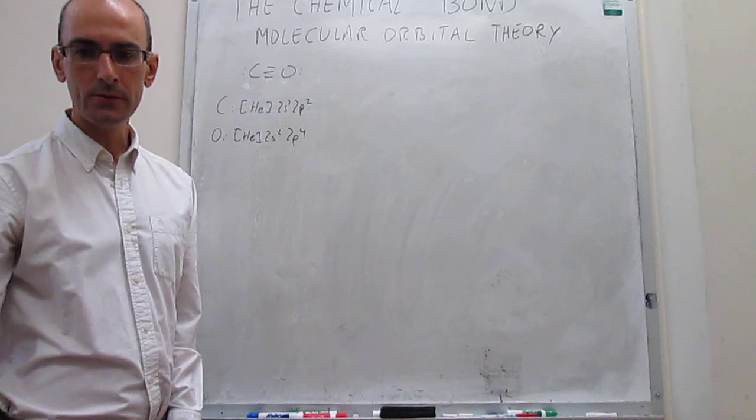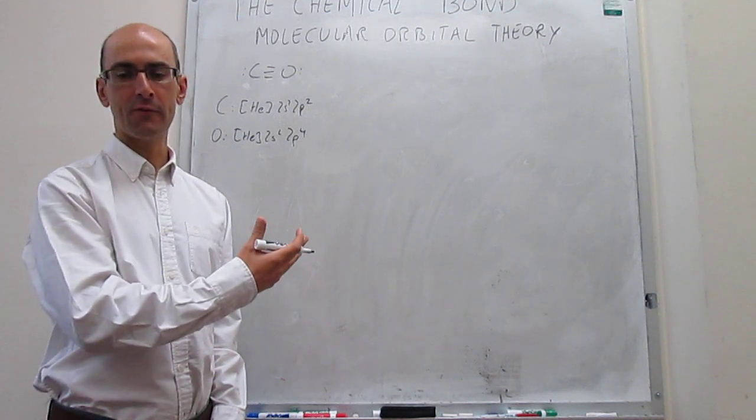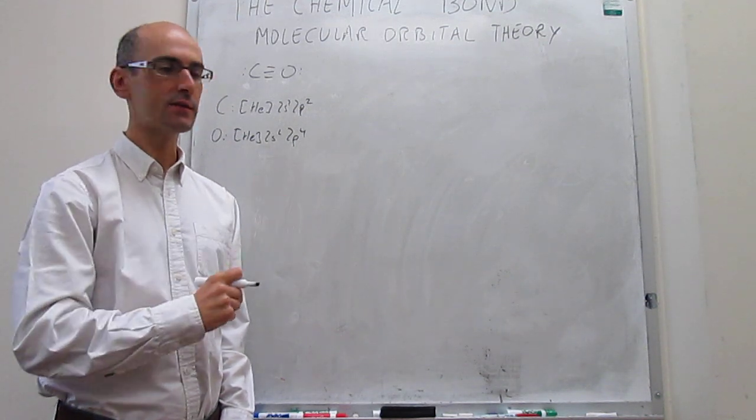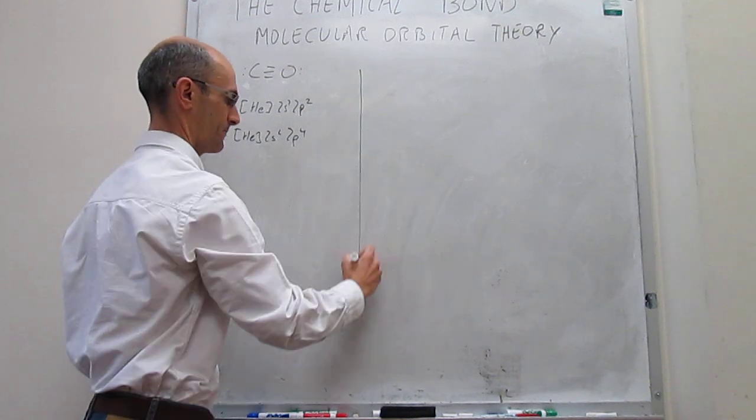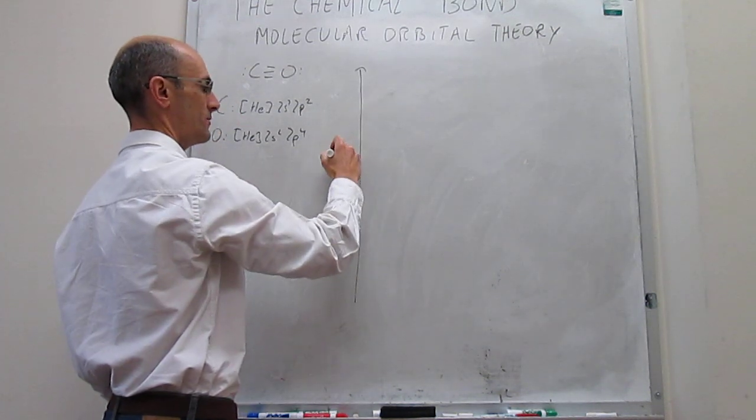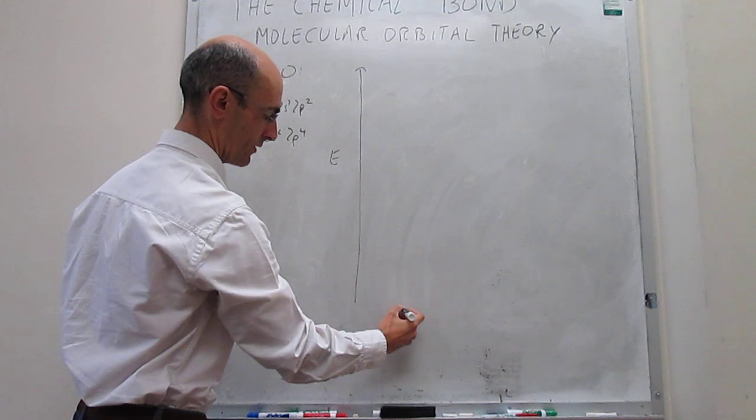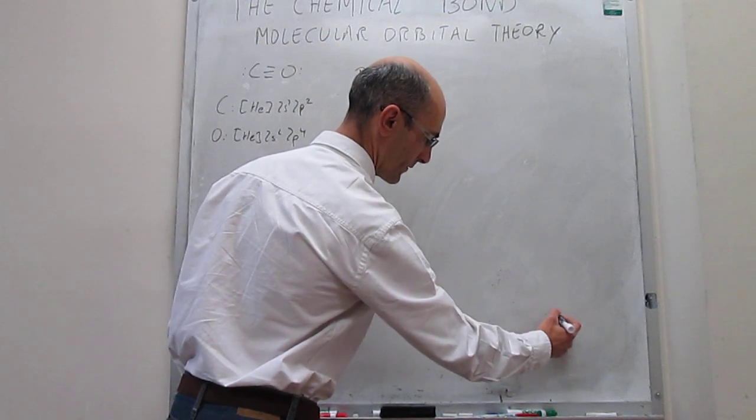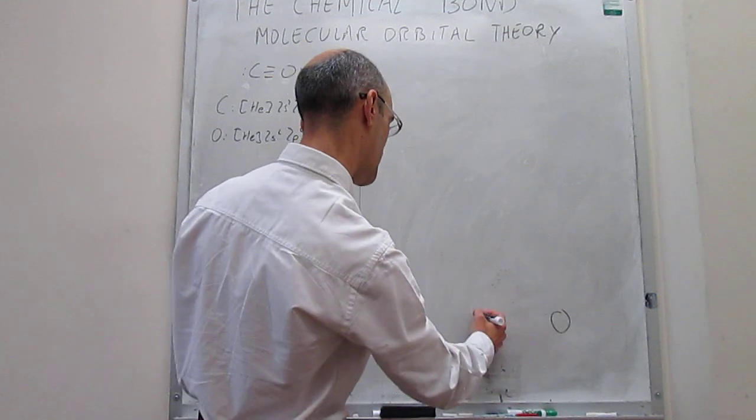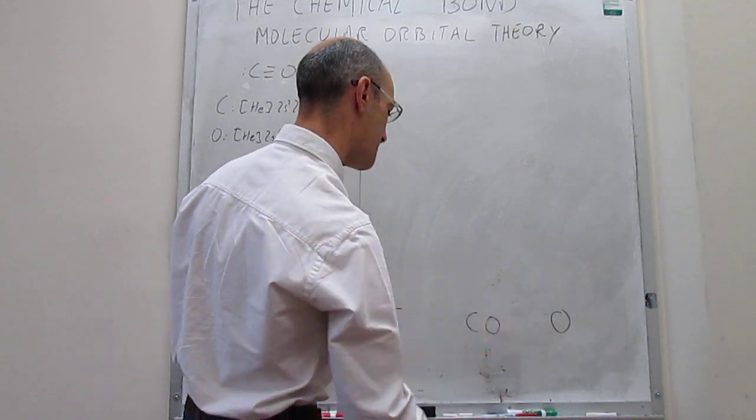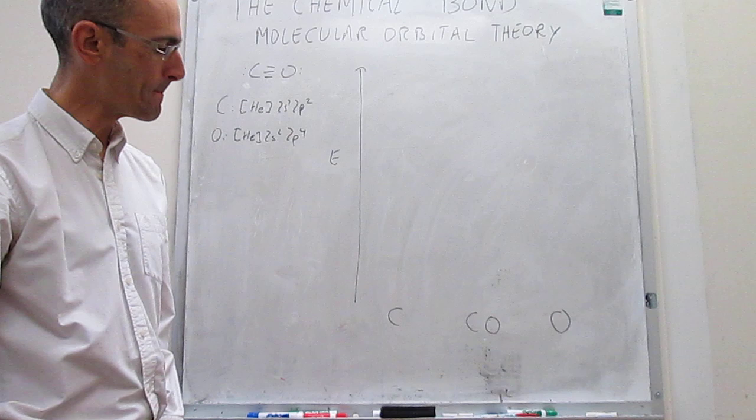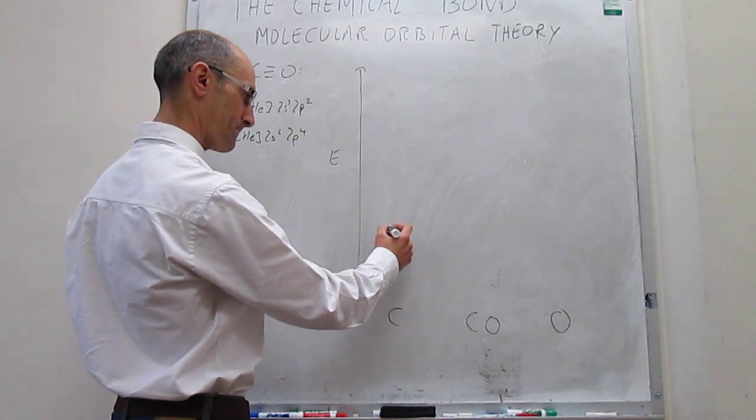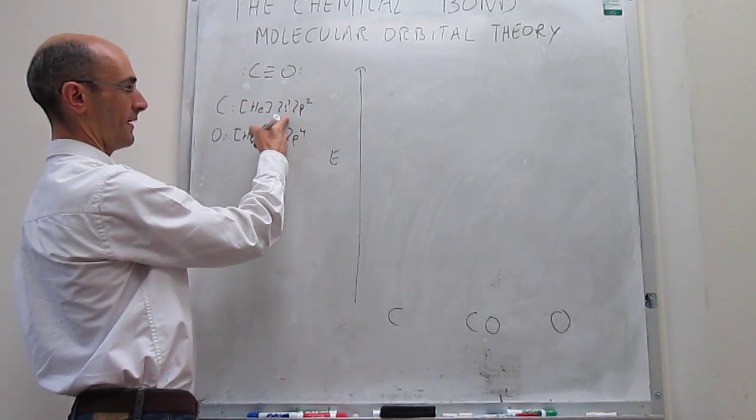The next thing that we do is draw the energy diagram in which we place the atoms to the sides of the molecular orbital diagram. That would be energy, we are going to put here the orbitals of carbon, here you will have the orbitals of oxygen, and somewhere in the middle we'll have the orbitals of the molecule.